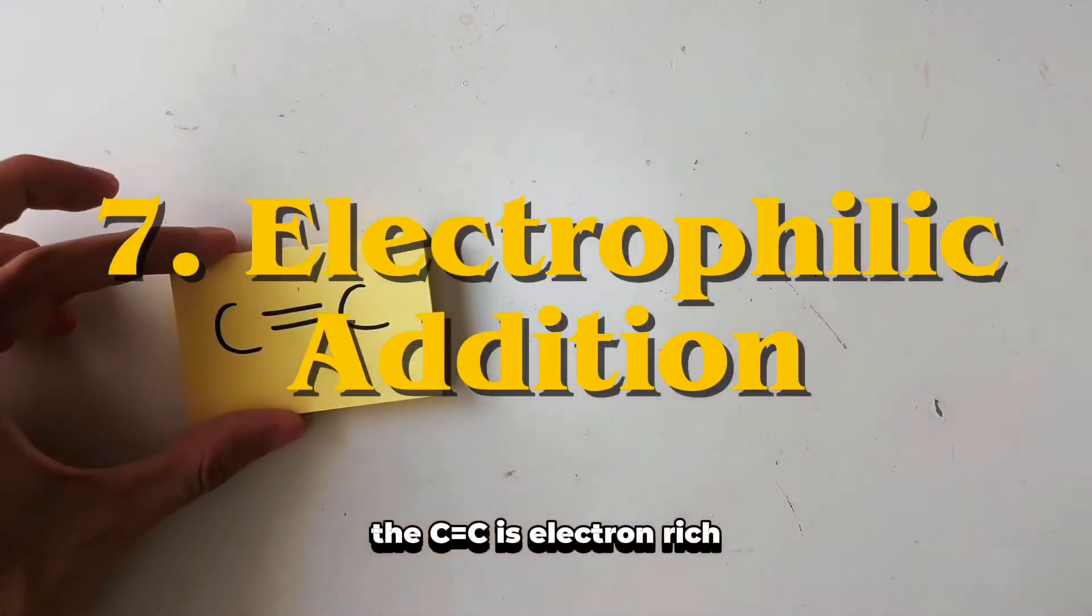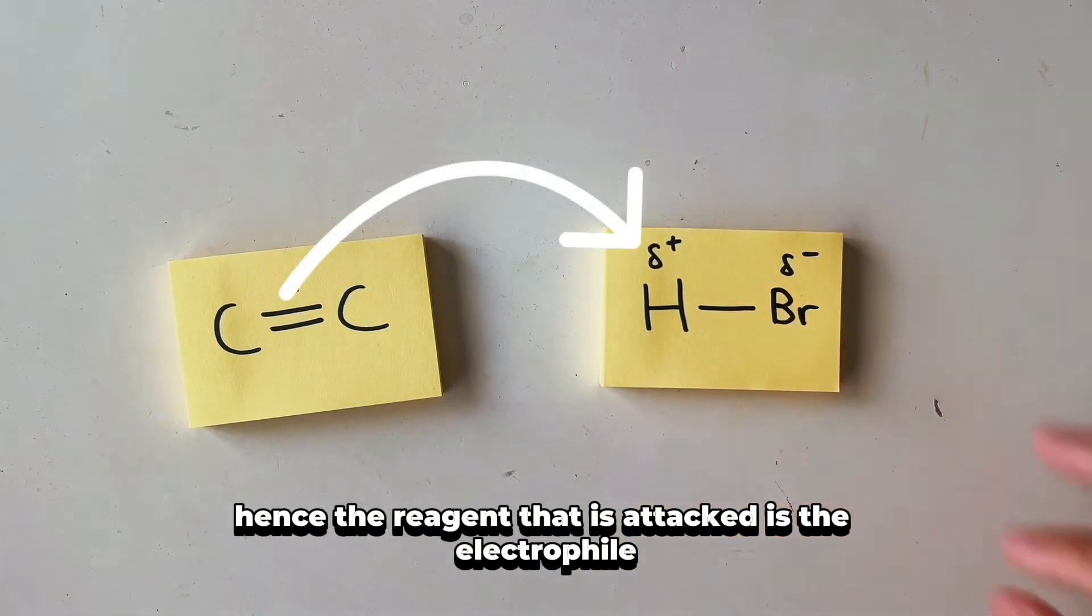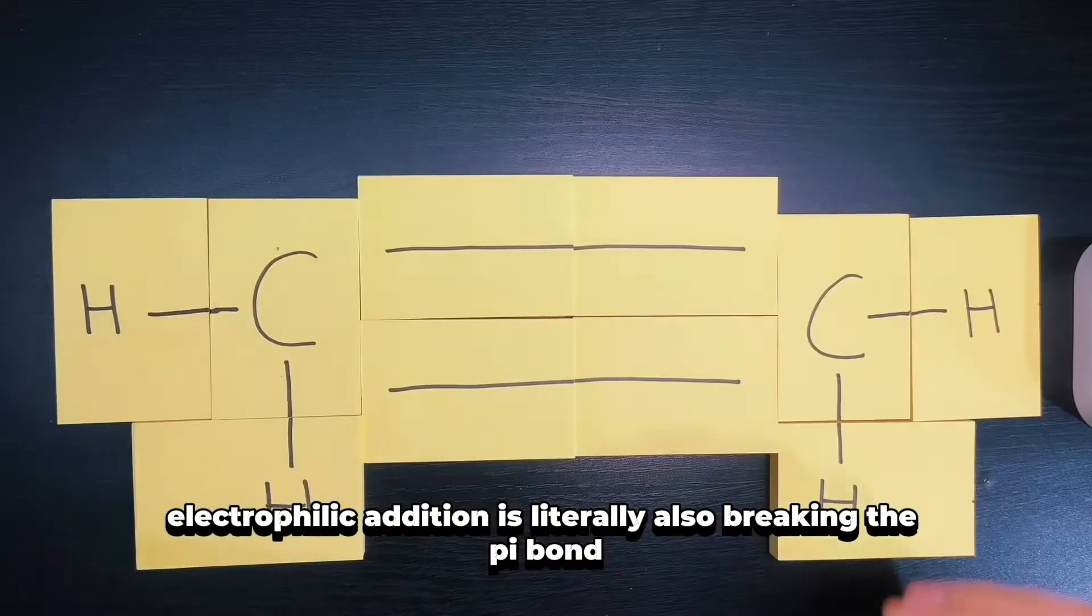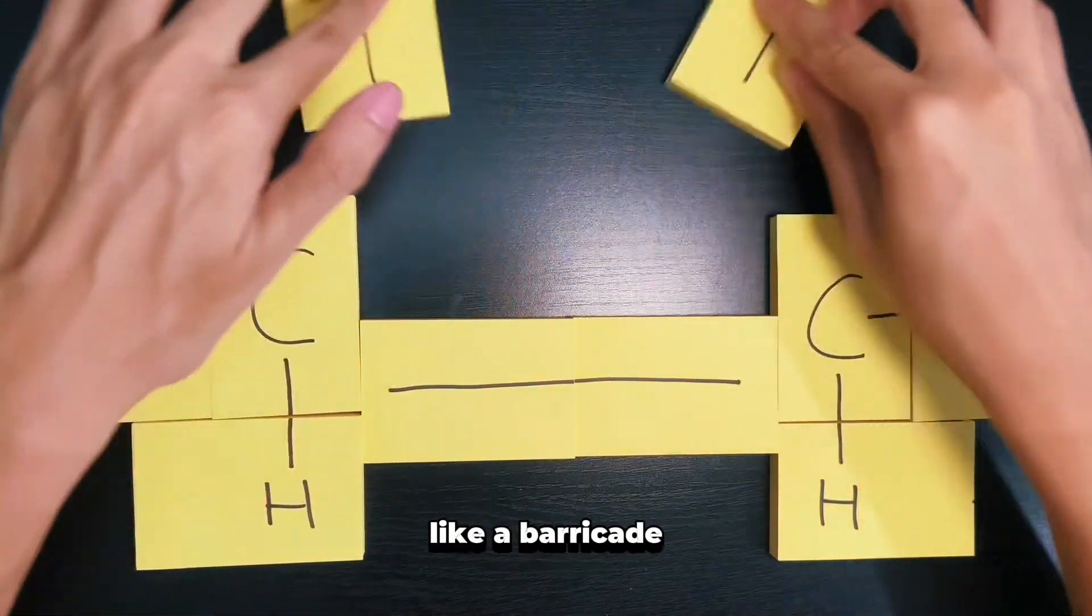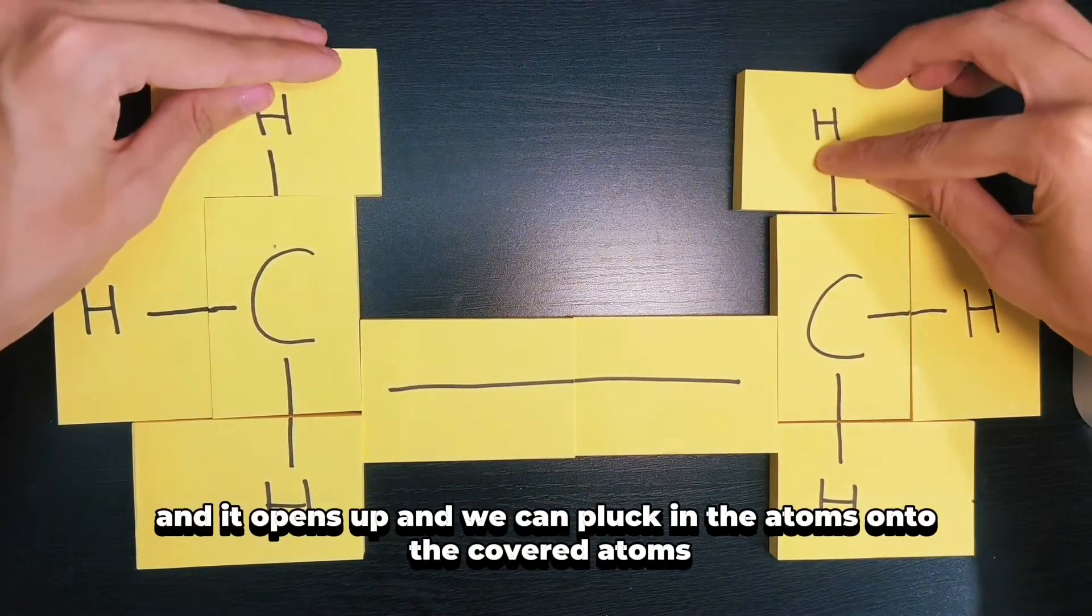For electrophilic addition, the C=C double bond is electron-rich, hence the reagent that is attacked is the electrophile such as HBr, Br2, or H2. Electrophilic addition is literally also breaking the pi bond like a barricade and it opens up and we can plug in the atoms onto the carbon atoms like so.